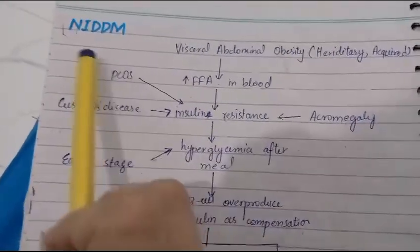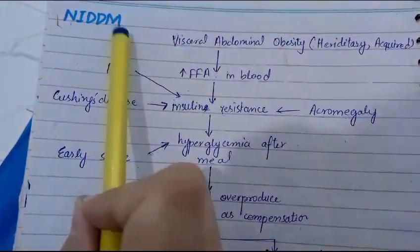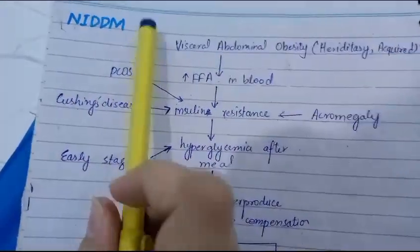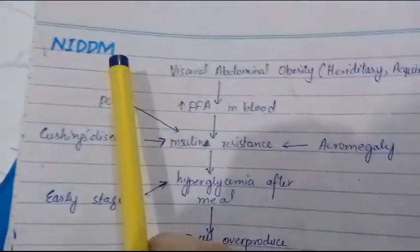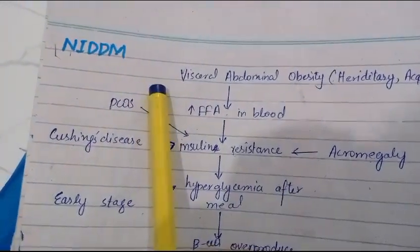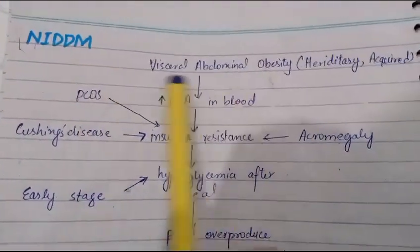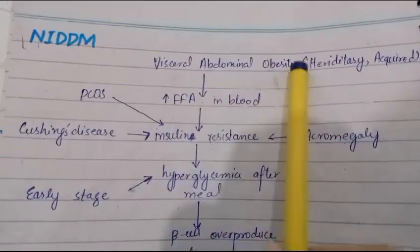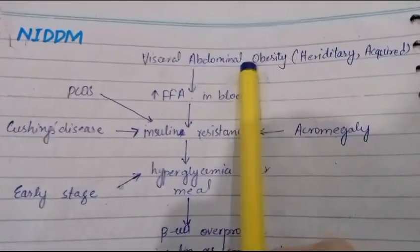So students, now we are discussing NIDDM, which is non-insulin-dependent diabetes mellitus, which we call type 2 diabetes, typically occurring after 35 to 40 years. In this condition, the main role is played by visceral abdominal obesity.